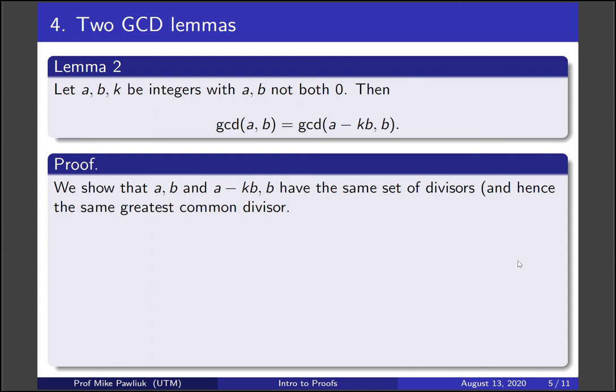I like this proof because it does something kind of interesting. We're trying to show that the GCDs are equal. So we're trying to show that their greatest common divisors are equal. So what we'll actually do is show that they have the same set of divisors. So we'll show that a and b and a minus kb and b have the same set of common divisors. Therefore, they'll have the same greatest common divisor.